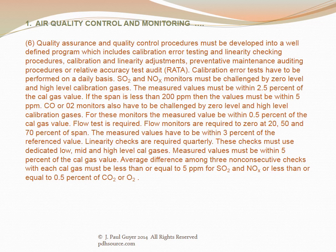Carbon monoxide or O2 gas monitors also have to be challenged by zero level and high level calibration gases; the measured value must be within 0.5 percent of the cal gas value. Flow monitors are required to zero at 20, 50, and 70 percent of span, with measured values within three percent of the reference value. Linearity checks are required quarterly using dedicated low, mid, and high level cal gases; measured values must be within five percent of the cal gas value. The average difference between three non-consecutive checks with each cal gas must be ≤5 ppm for SO2 and NOx, or ≤0.5 percent for CO2 or O2.